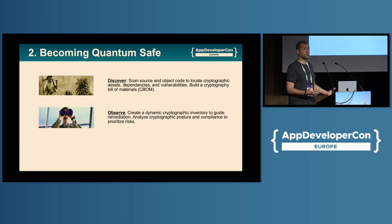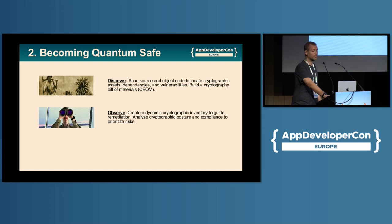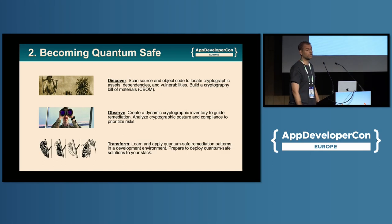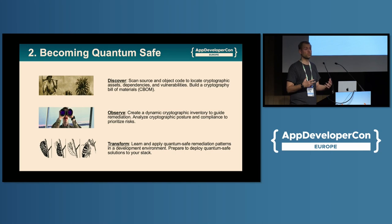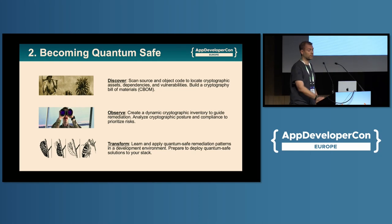Step two is observe. Now that you have this list, prioritize. Where are you most at risk? What posture do you need? Where do you need to be safe? And then lastly, you want to transform — learn some of the remediation patterns you can use to mitigate this risk, try them out in development, and start building a plan for getting them into production when the time comes.